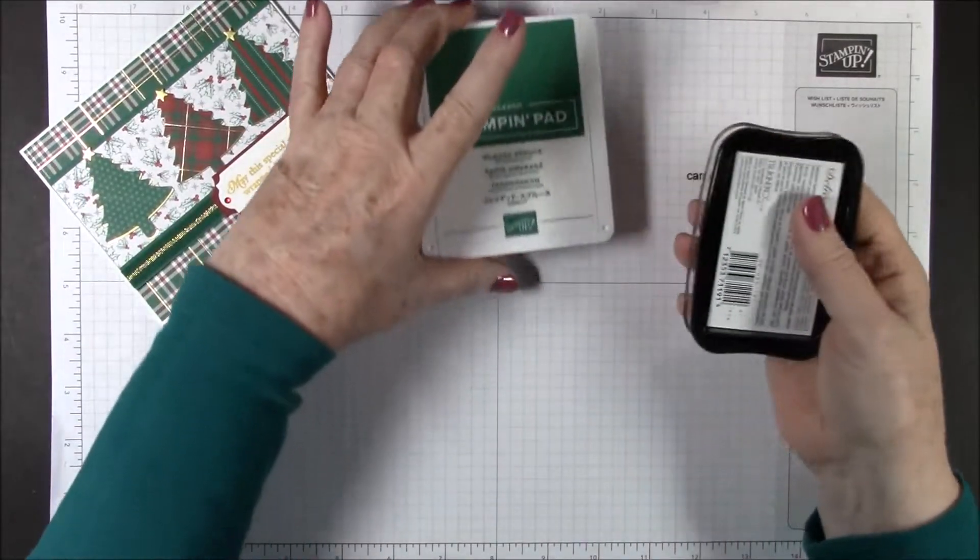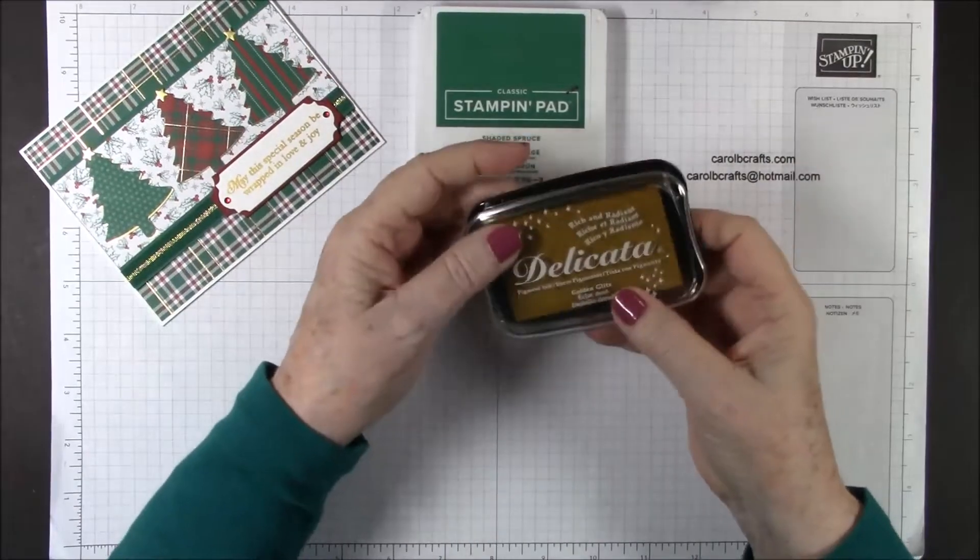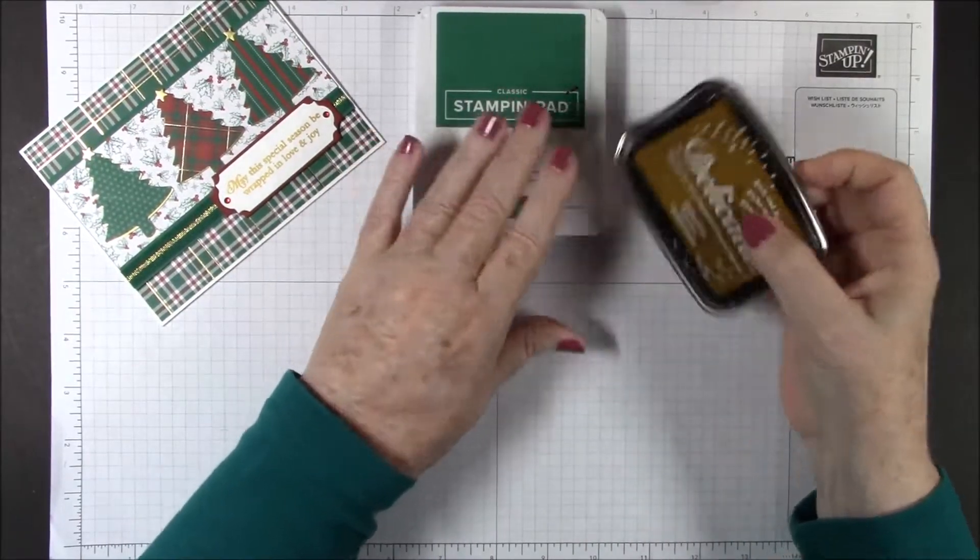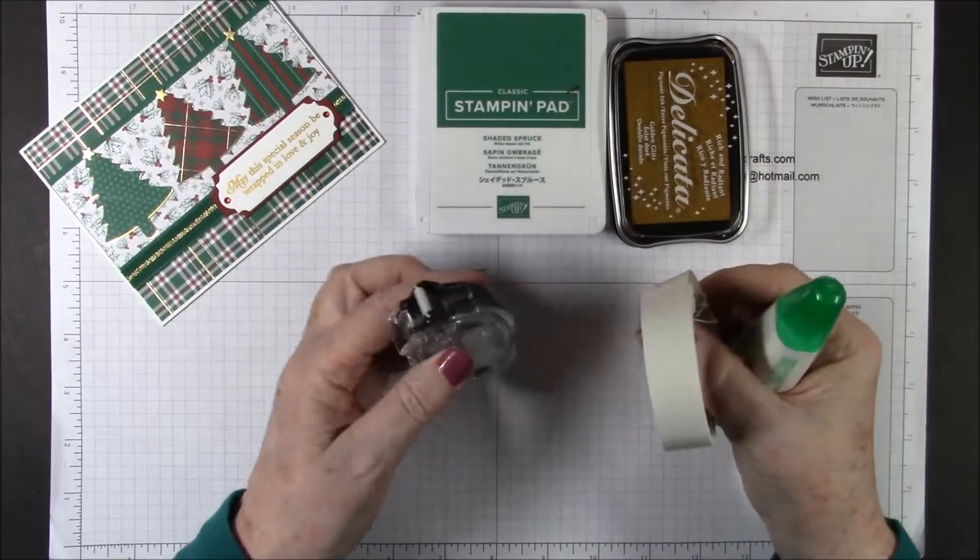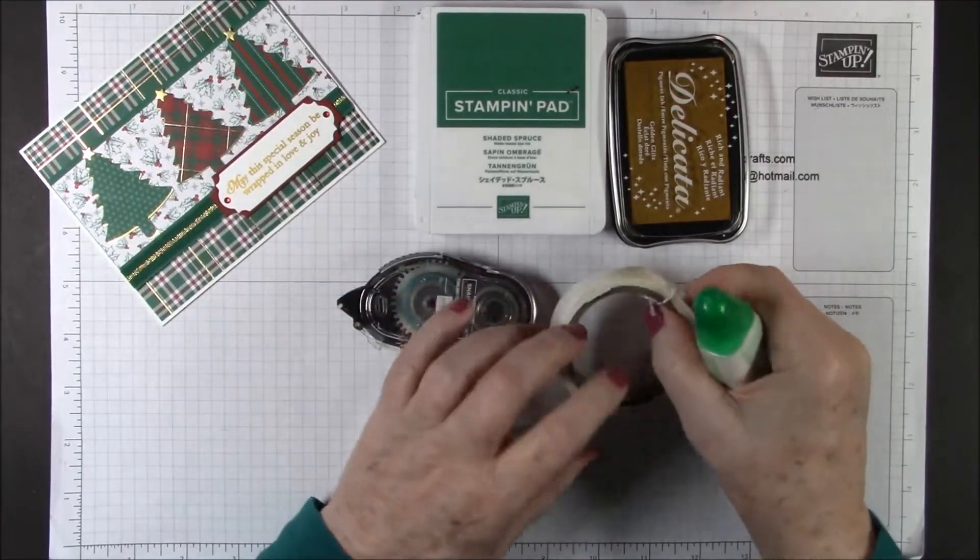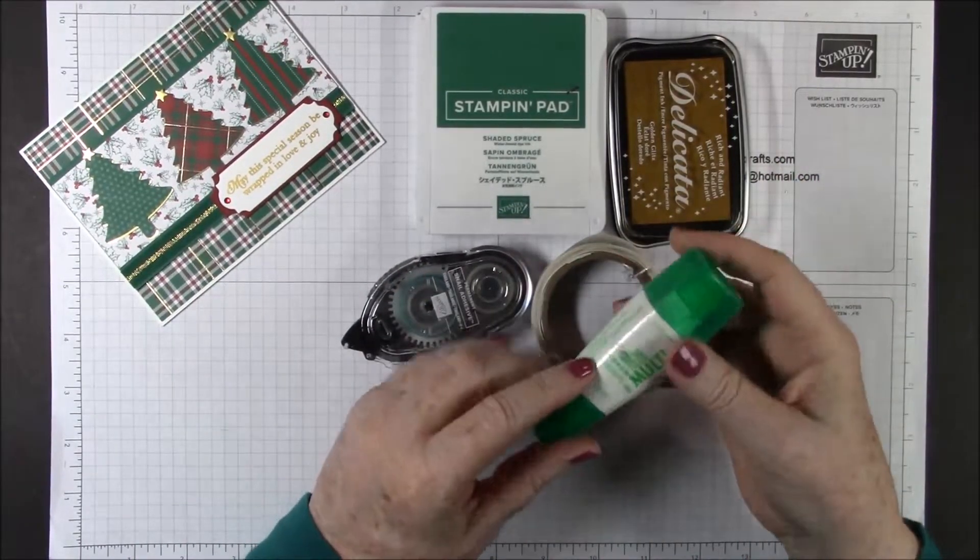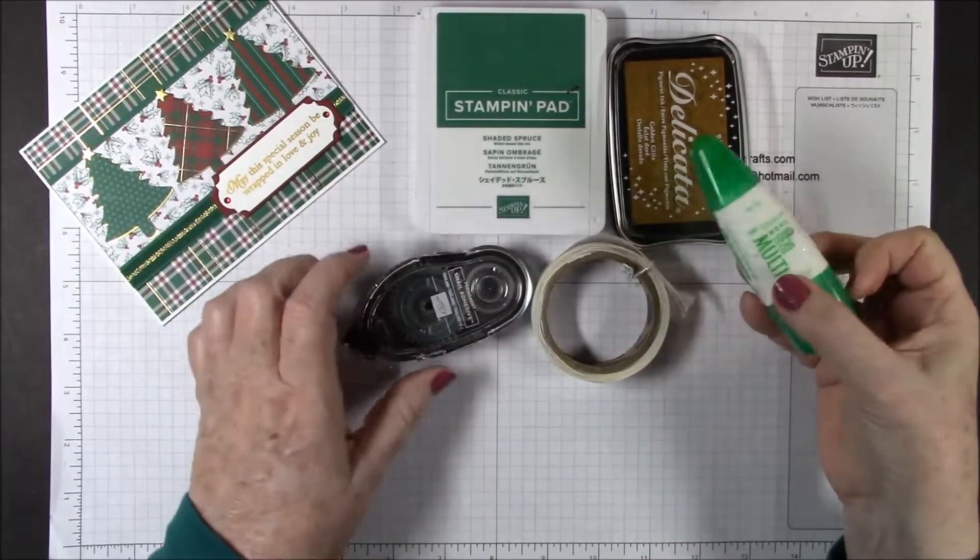For your inks you will need shaded spruce and the new delicata golden glitz ink. For your adhesives you'll want to grab your snail, your glue dots, your mini glue dots, and your multi-purpose glue.